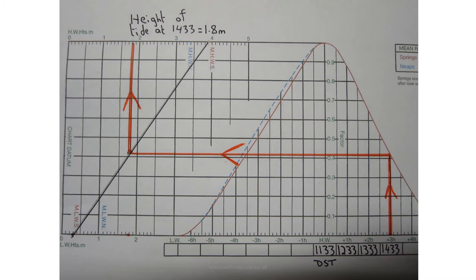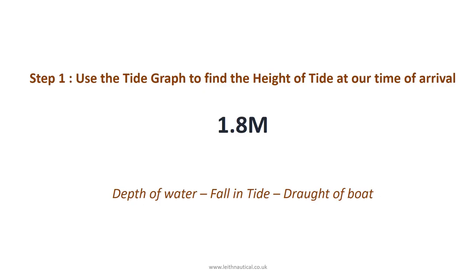Using the tide graph for Namly, we can see that at 14:33 the height of tide is 1.8 metres. So for Step 1, we've used the tidal graph and we've found the height of tide.